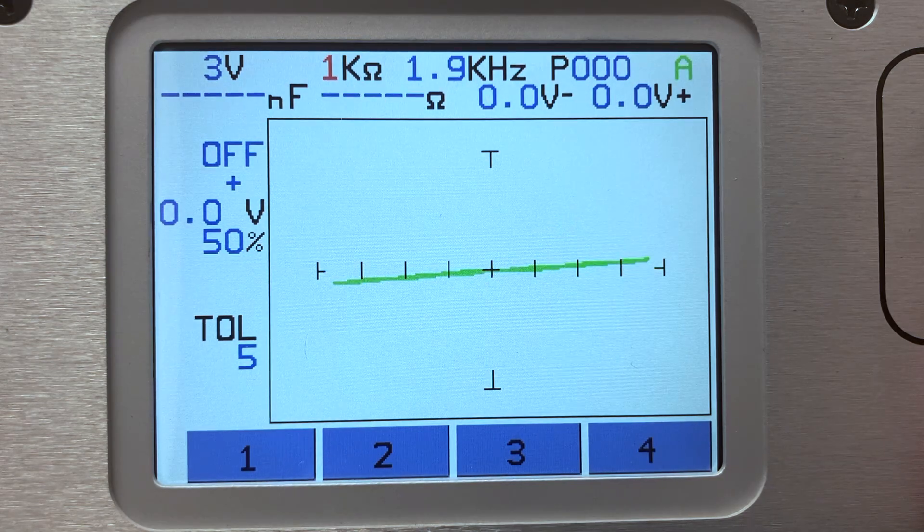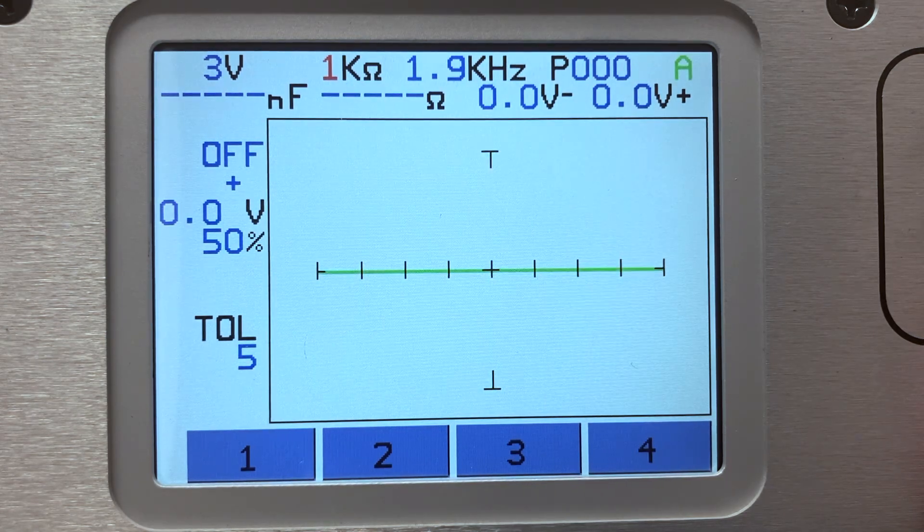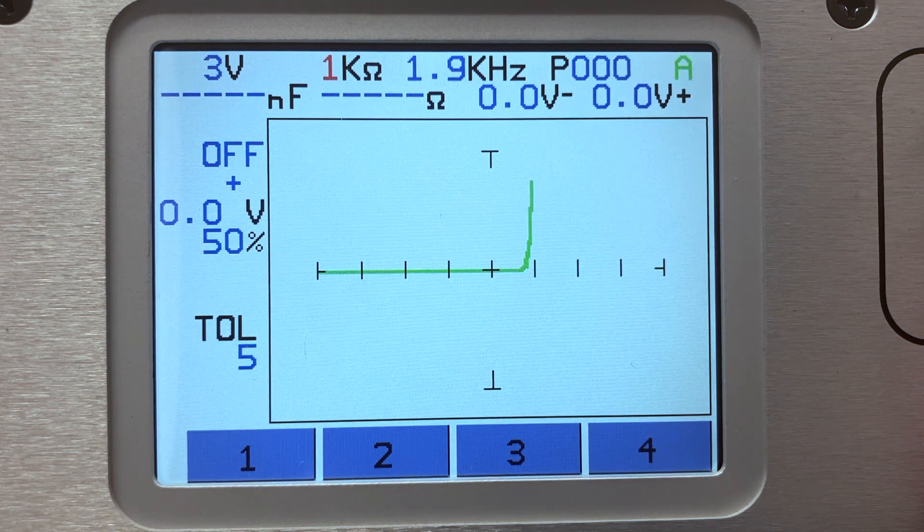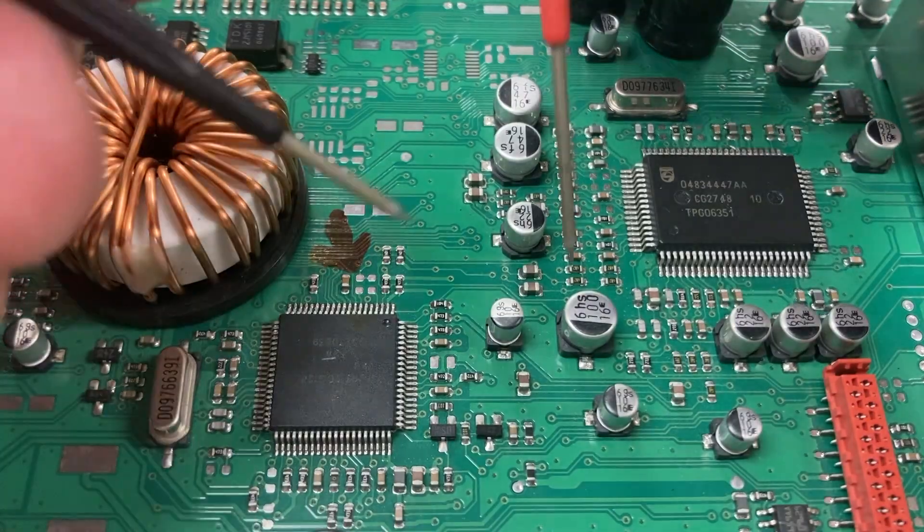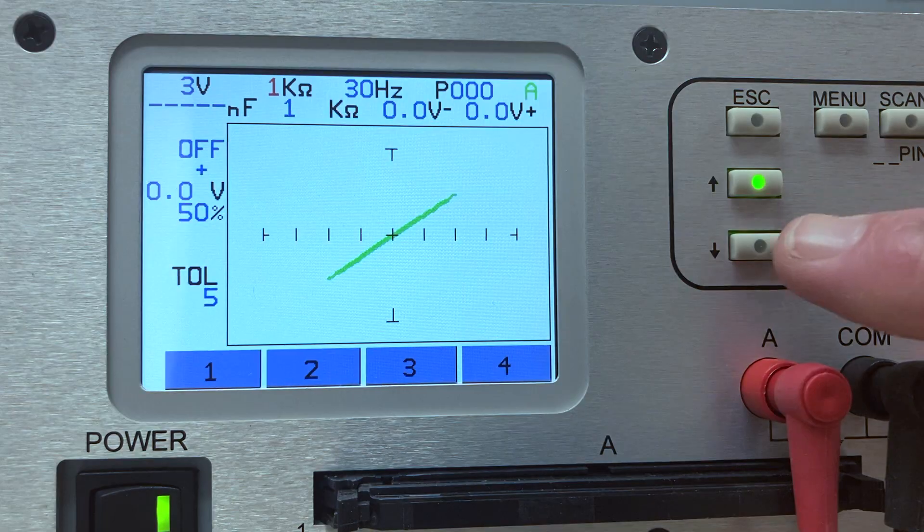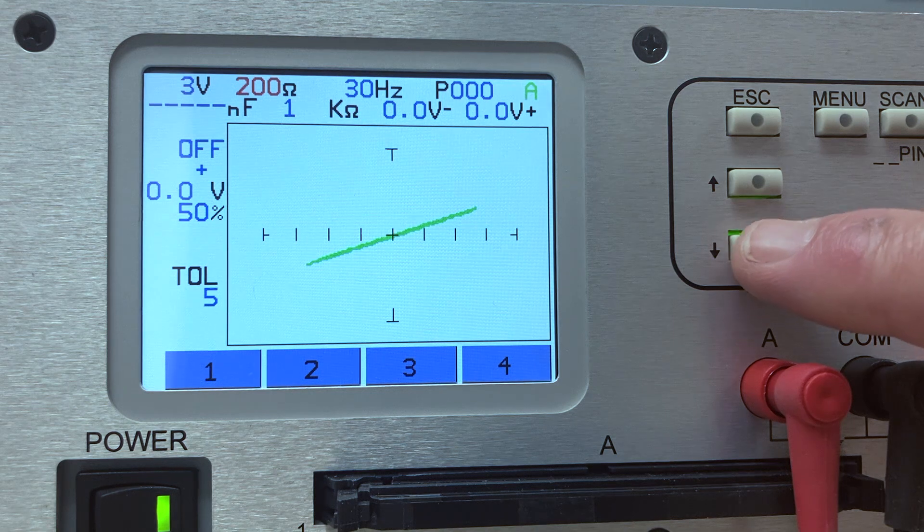The concept of analog signature analysis, or ASA, and using it for circuit board troubleshooting has existed for many years. Huntron pioneered purpose-built instruments using ASA to help technicians isolate component faults on printed circuit boards.